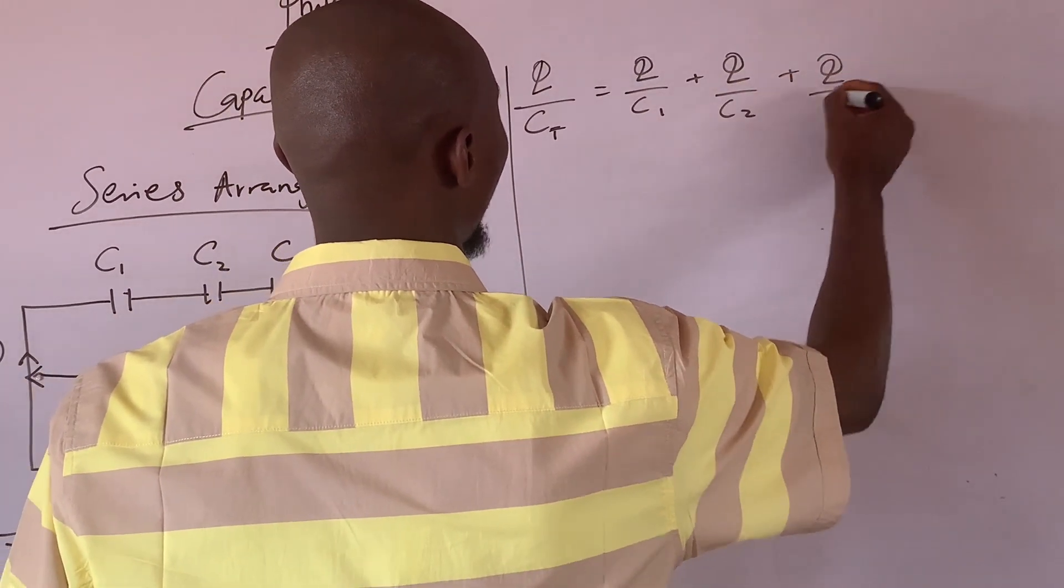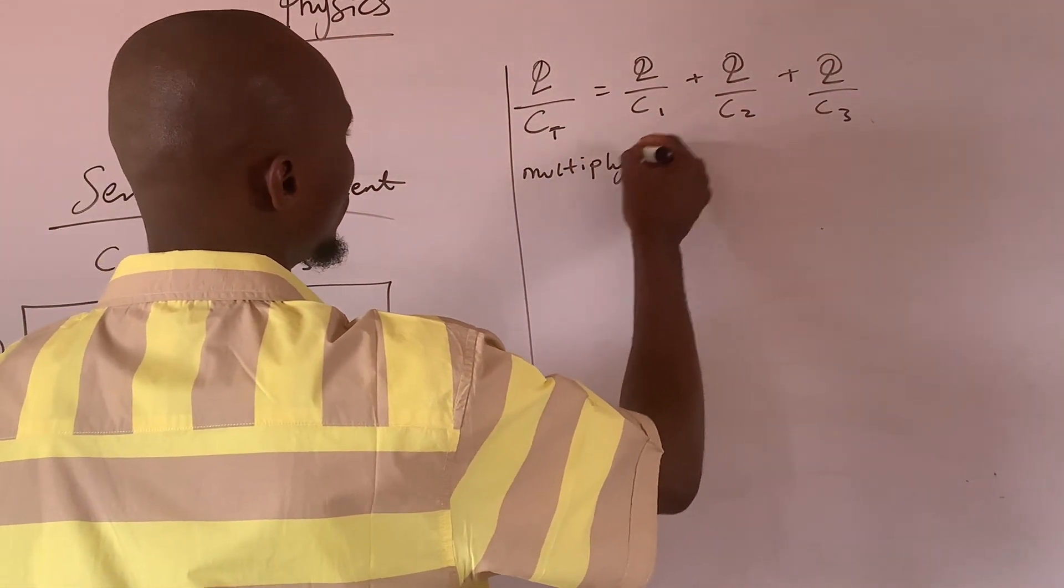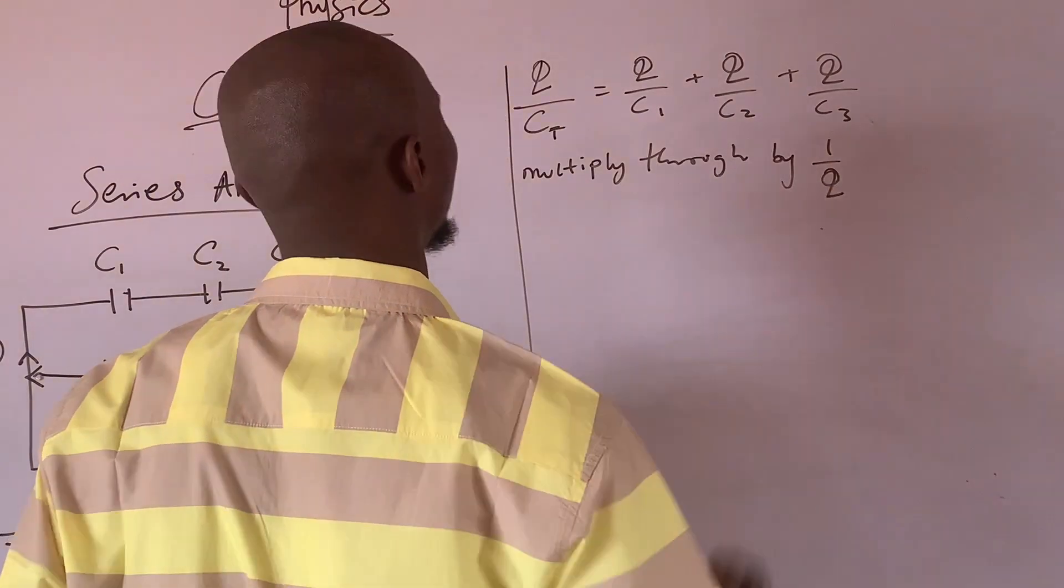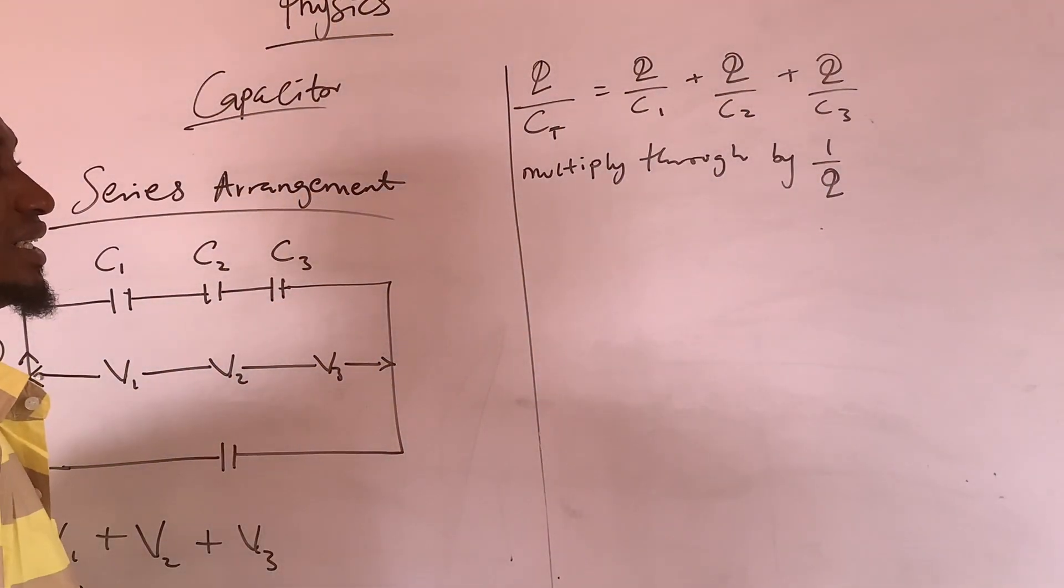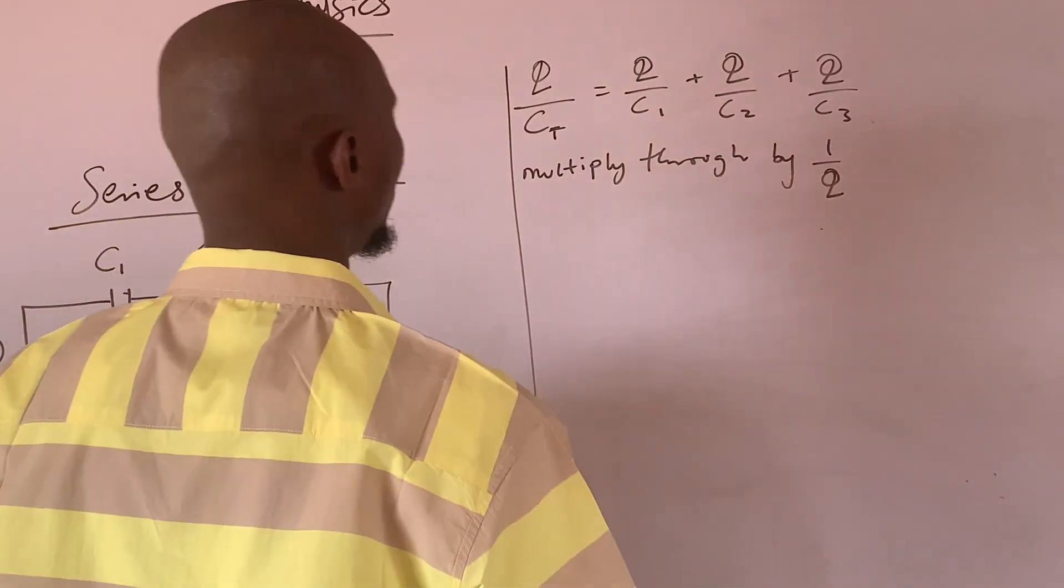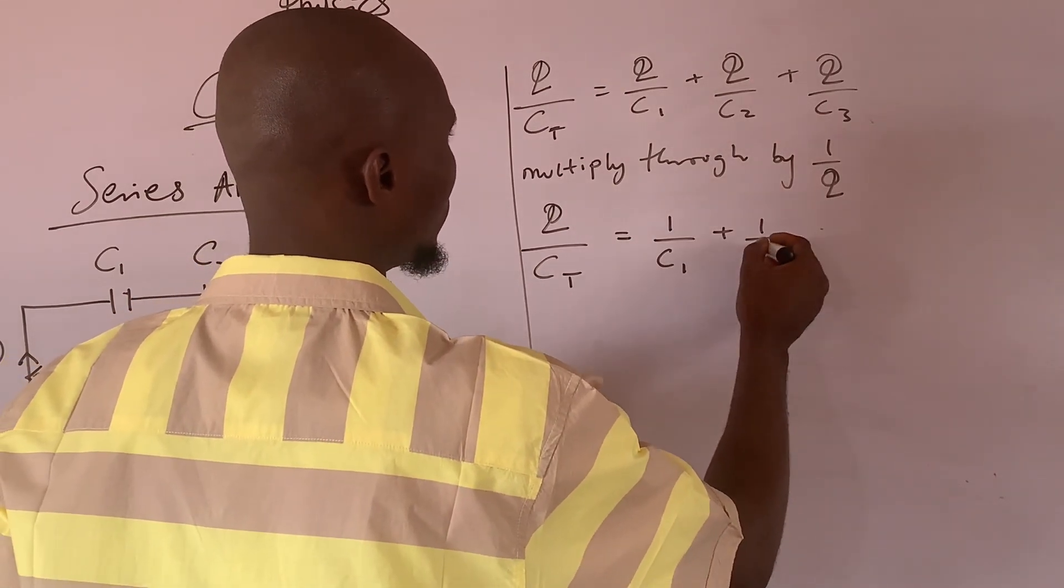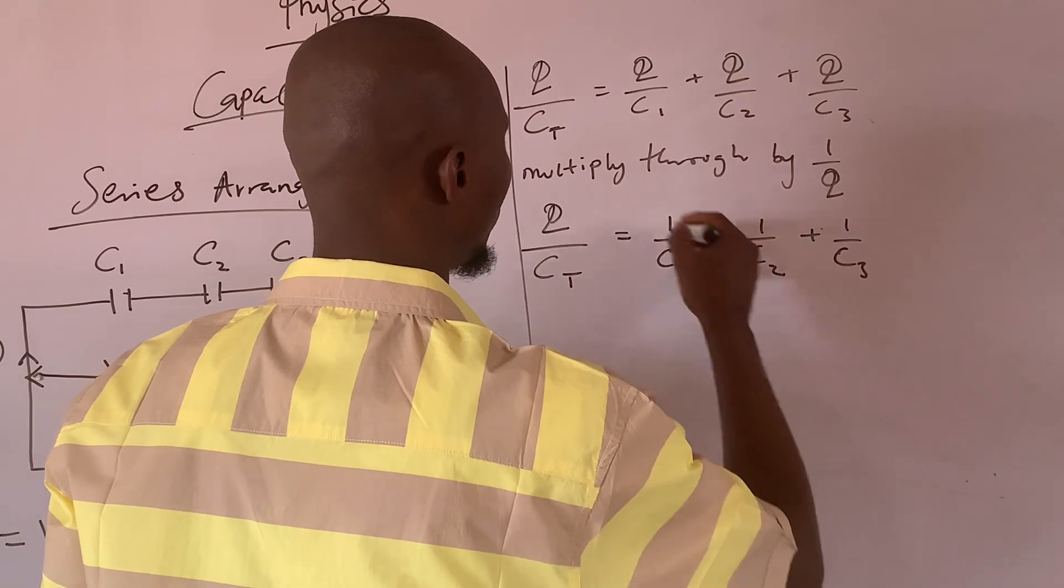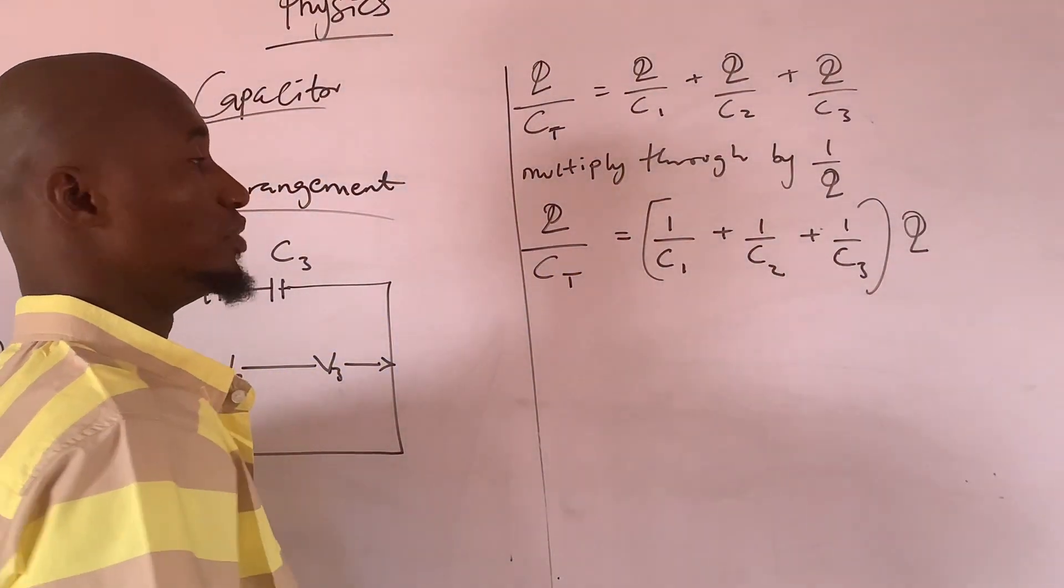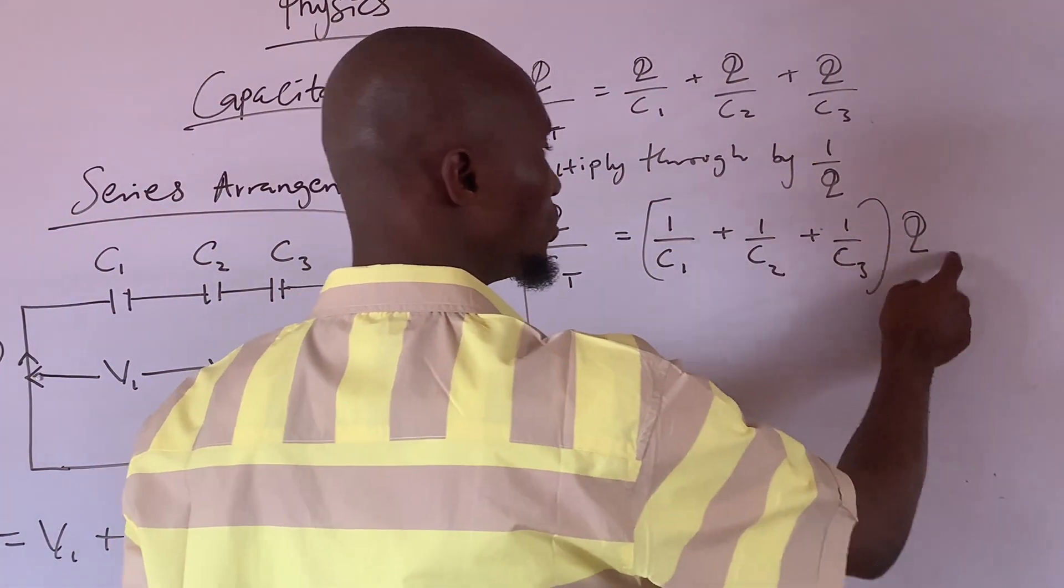Now, I want to repeat the question over here. Q over CT equals to Q over C1 plus Q over C2 plus Q over C3. What do I do? Multiply through by 1 over Q. But before I do that, I need to factor out Q because Q is common here. Before I multiply through, Q over CT is equals to 1 over C1 plus 1 over C2 plus 1 over C3, all in brackets, times Q.